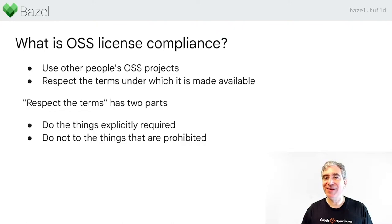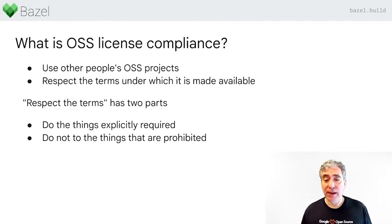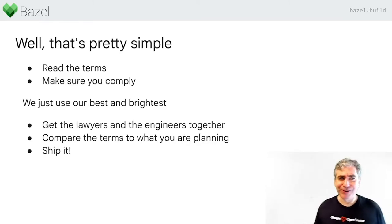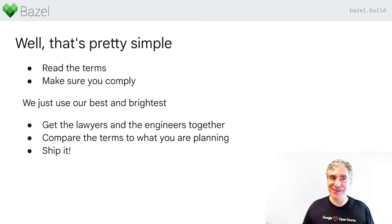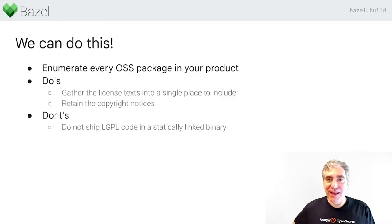Don't do prohibited things is rarely spelled out in a license, but certain things are difficult to comply with. For example, LGPL code has to be distributed in a way that the end user can relink their application using their own build of the LGPL library. I can do that in a desktop app, but it is virtually impossible and unreasonable to try to do that in a phone app. So we think of that kind of thing as: don't ship LGPL code on a phone. This is all pretty simple — you read the terms of the license, you make sure you comply, and if it all works, you ship it.